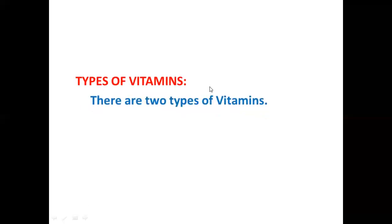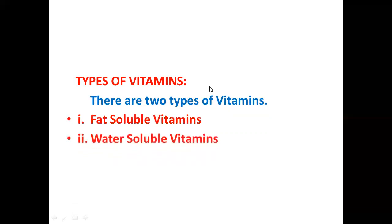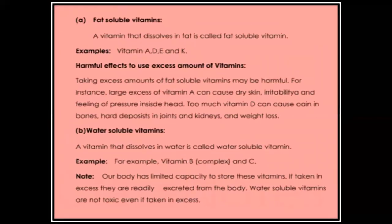There are two important types of vitamins: fat-soluble vitamins and water-soluble vitamins. Fat-soluble vitamins are vitamins that dissolve in fat. The examples are vitamins A, D, E, and K. You can remember these by the mnemonic 'DAKE' — vitamin D, vitamin A, vitamin K, and vitamin E are all fat-soluble vitamins.